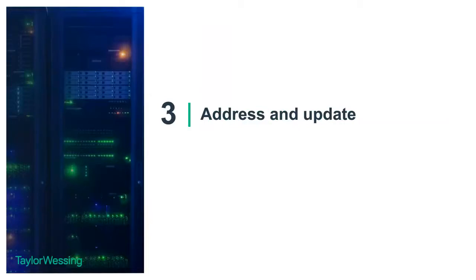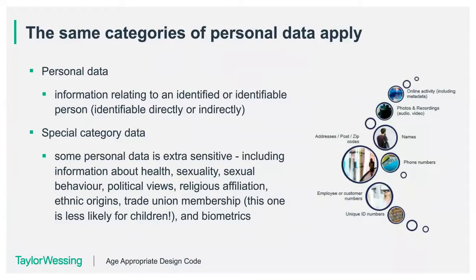The fourteenth standard is around connected toys and devices — a growth area — where it's important they come with the appropriate privacy tools so users can access their privacy rights when using those kinds of devices. The fifteenth standard is around online tools in general — privacy policies and notices, as well as information around how to access rights of erasure and subject access rights, need to be prominent and accessible. There are also other requirements around accessibility, including the European Accessibility Act, so there are lots of different overlapping requirements around digital accessibility, and a challenge for businesses will be working out how to comply with all of them without becoming a massive burden.